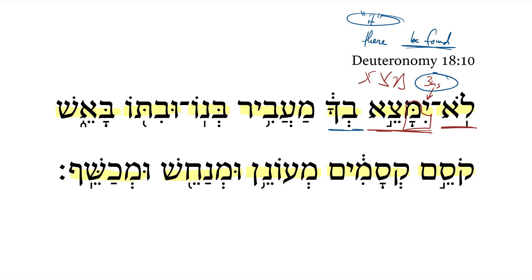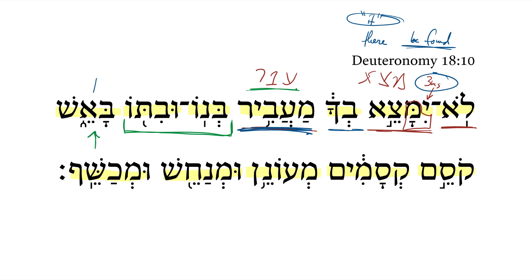Well, what is the 'it'? A little more specifically, we get a hifil participle of the verbal root ayin-bet-resh, to pass through. As a hifil participle, it would be one who causes to pass through — and what he is causing to pass through would be his son or his daughter in the fire. So the idea is one who causes his son or daughter to pass through the fire; in other words, one who sacrifices his son or daughter. That person is the 'it' who may not be found in Israel.